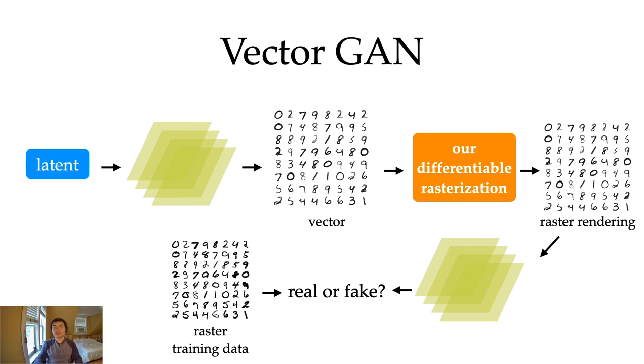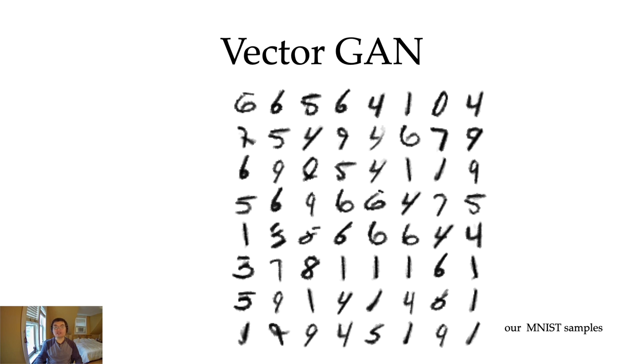So instead of taking the raster image as an input, we train a classifier to classify between the rendering and the raster training data. So here's some samples from our vector GAN generated by sampling the latent variable. These results are fine, but GANs are more difficult to train so we don't get results as good as a variational autoencoder.